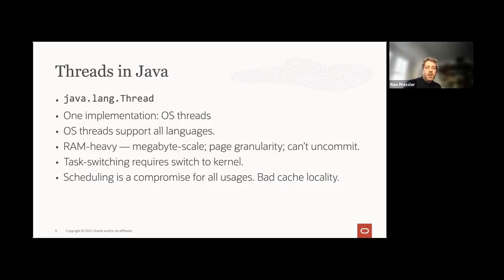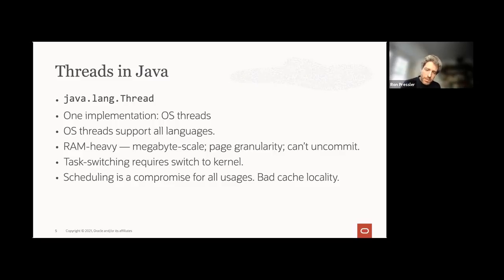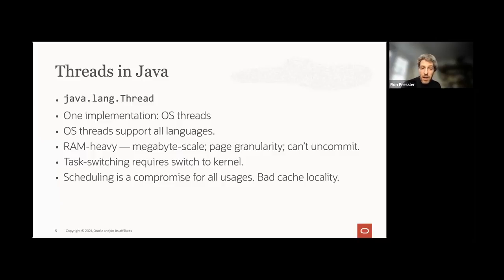To do task switching, we need to switch to the kernel. The algorithm in the kernel that chooses which threads to run on which CPU core is a compromise for all possible uses in the system. Different threads can do very different things — a thread handling network transactions behaves very differently from a thread doing video encoding.